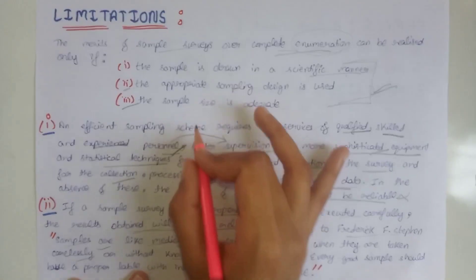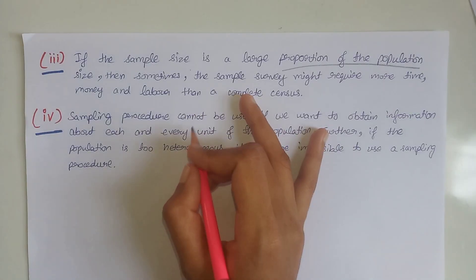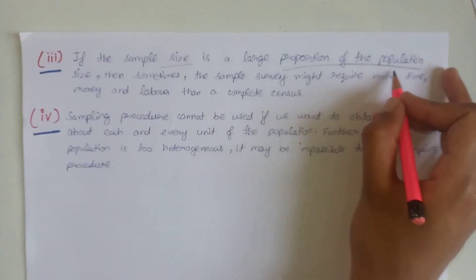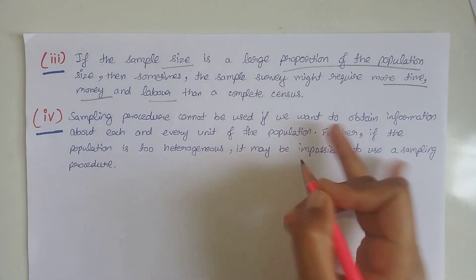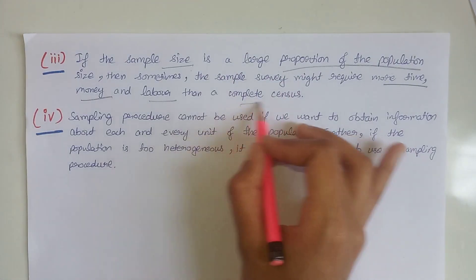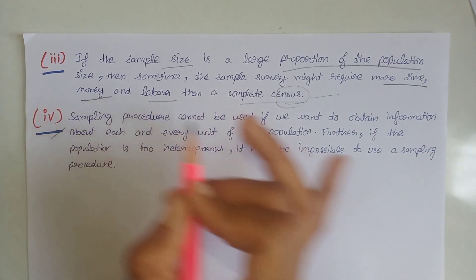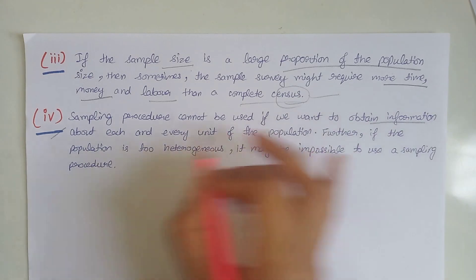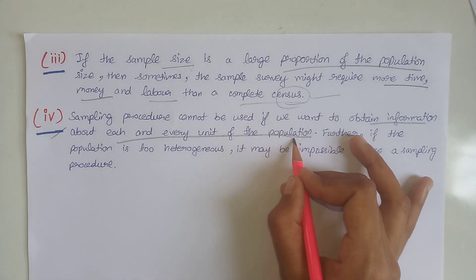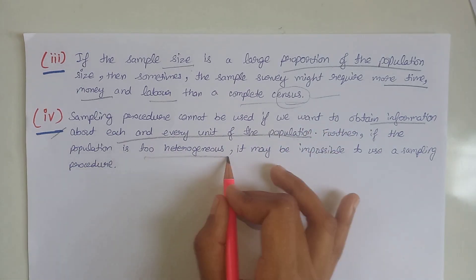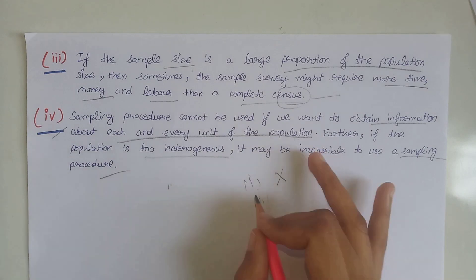The third condition is that the sample size is adequate — that is, suitable. If the sample size is too large a proportion of the population, we will need more time, money, and labor, and there may be no benefit over a complete census. Additionally, if we want information about each and every unit of the population, we cannot rely on a sample alone. Moreover, if the population is too heterogeneous, it is impossible to use a sampling procedure.